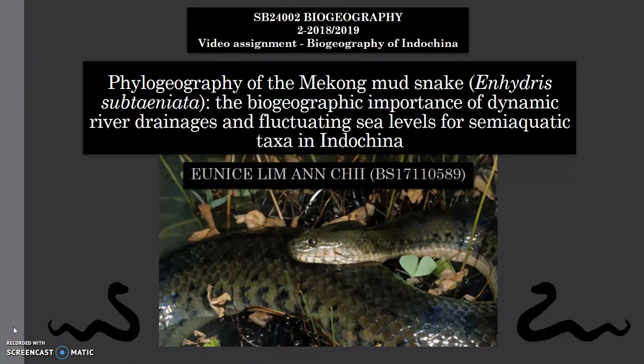Hi, I'm Eunice and for my video presentation on the biogeography of Indochina, I've chosen the article called Phylogeography of the Mekong Mud Snake, Anhydris subteniata — the biogeographic importance of dynamic river drainages and fluctuating sea levels for semi-aquatic taxa in Indochina.